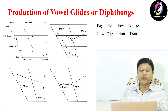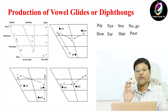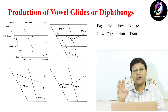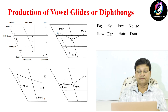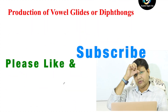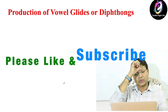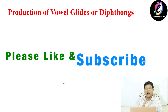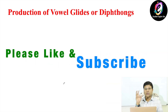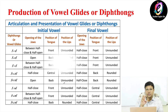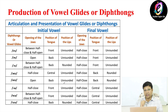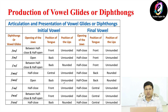Now let me show you the production of vowel glides or diphthongs. This chart will tell you about all the diphthongs — how they are produced, the position of the tongue, the position of the lips, and the opening of the jaws, because there are two different vowels together.